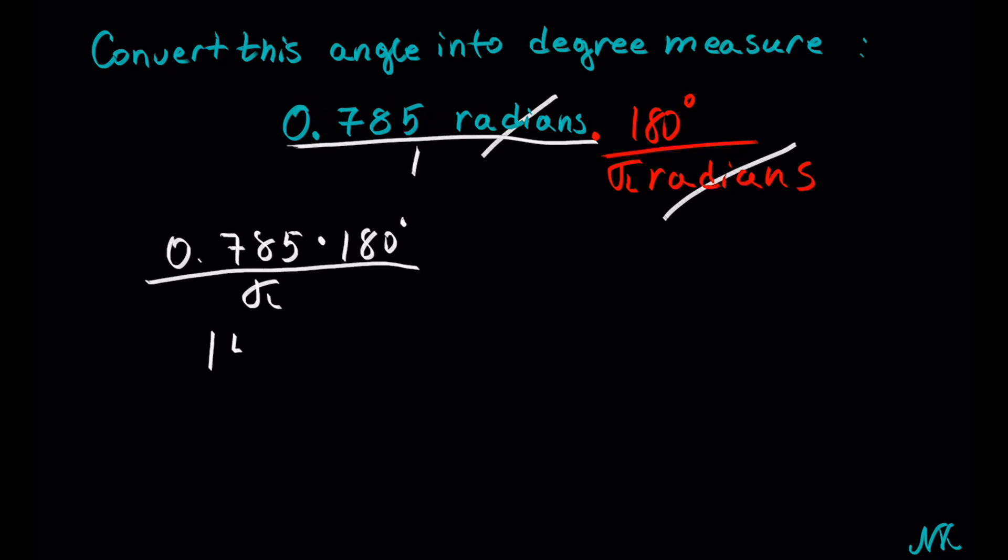So 141.3 divided by pi will give us about 44.977, and 141.3 divided by 3.14 is exactly 45.